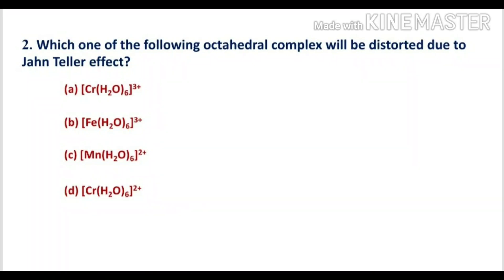The Eg orbital is highly prone to Jahn-Teller distortion, because if one electron or three electrons are present in the Eg orbital, the complex will be easily distorted. High spin d4, low spin d7, and d9 complexes will show significant Jahn-Teller distortion.